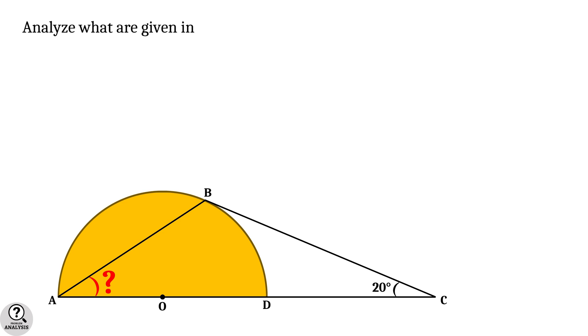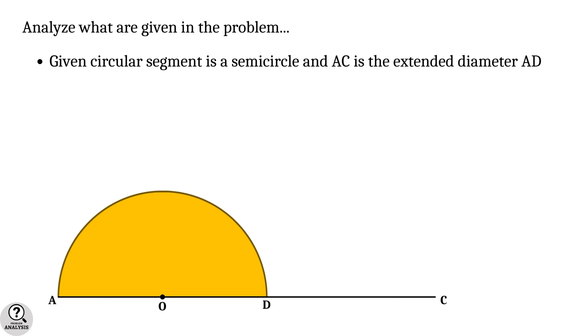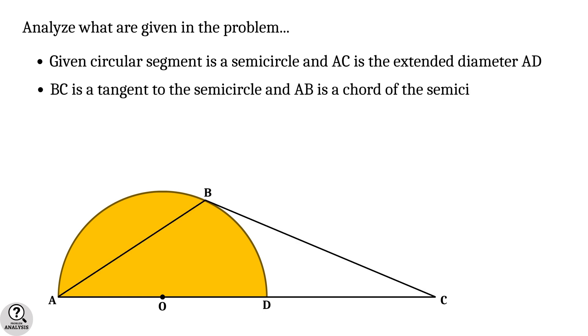Now let's analyze what are given in the problem. First of all, the given circular segment is a semicircle and AC is the extended diameter AD. Secondly, BC is a tangent to the semicircle and AB is a chord to the semicircle. And finally, the angle BCA is equal to 20 degrees.